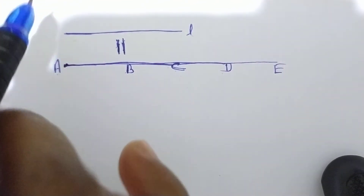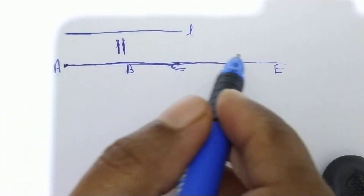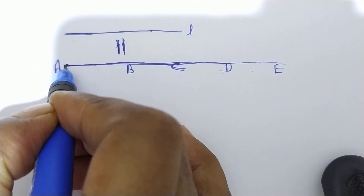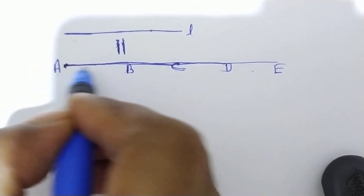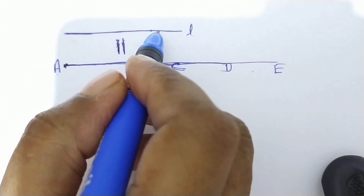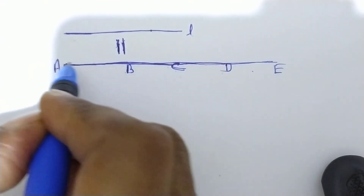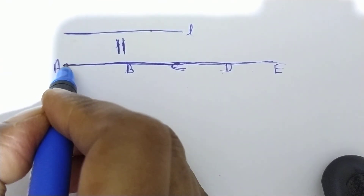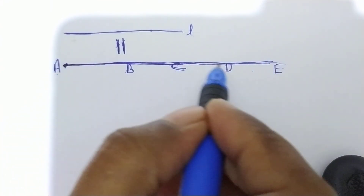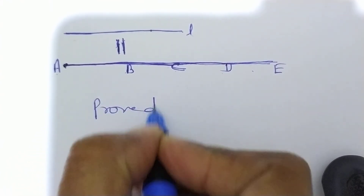Prove ho gaya! Theorem 5. Phir se ek baar samjha dun: Since lines AB, AC, AD and AE are parallel to line L, therefore point A lies outside L. Through A, lines AB, AC, AD and AE are drawn each parallel to L. But by parallel axiom, only one line can be drawn parallel to L through a point outside L. Therefore A, B, C, D, E yeh saare points collinear points hain. Proved! That's all for today. Thank you.